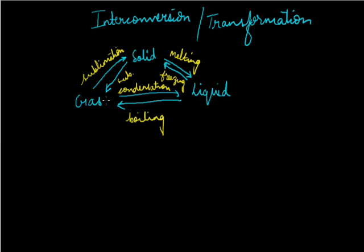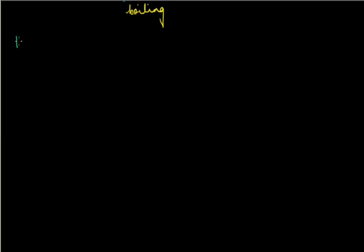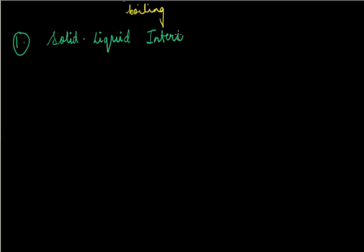When talking about transformation of solid to liquid, the process involved is melting. I have drawn a short diagrammatic representation of how interconversion by various processes can occur between the physical states of a substance. We will discuss these points one by one. I am starting with the first transformation — solid-liquid interconversion or solid-liquid transformation.